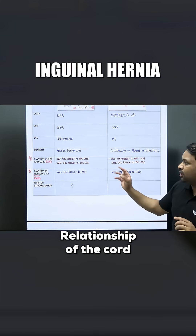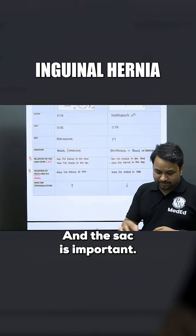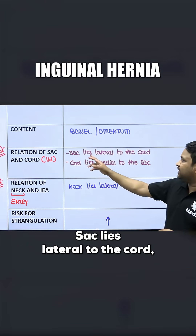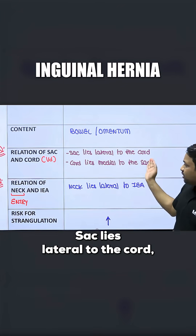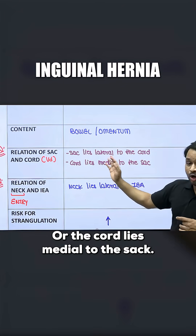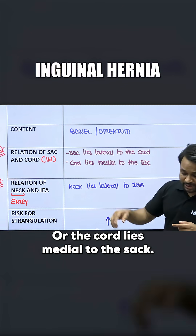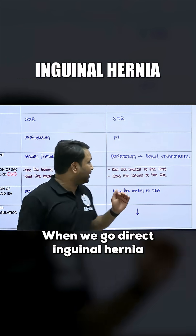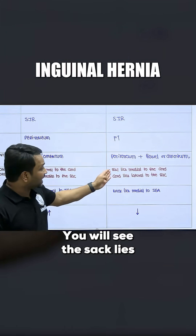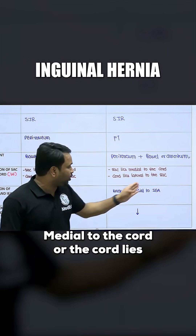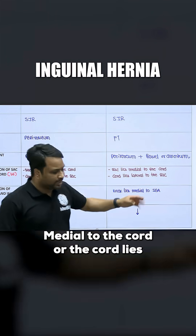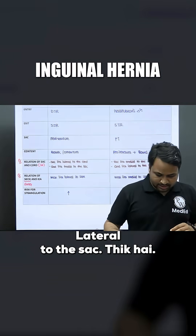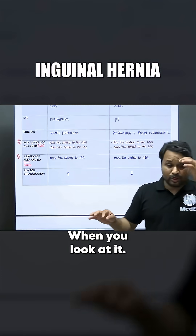Relationship of the cord and the sac is important. In indirect inguinal hernia, the sac lies lateral to the cord, or the cord lies medial to the sac. In the same context, when talking about direct, the sac lies medial to the cord, or the cord lies lateral to the sac.